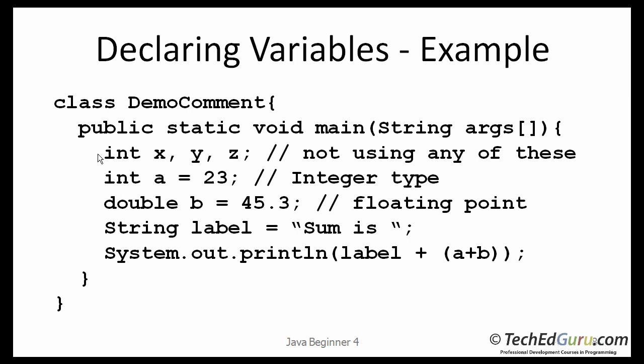Here are a couple of examples. On the first line here, I am declaring three variables. X, Y, Z, they are all of the type int, or 32-bit integer type. On the second line, I am declaring the variable a, and I am saying it is of the type int, while declaring, I am also giving it an initial value. The third one is a double type, and I am assigning it a value of 45.3. The fourth one is a string type, which contains a string, which I will use for labeling my answer.